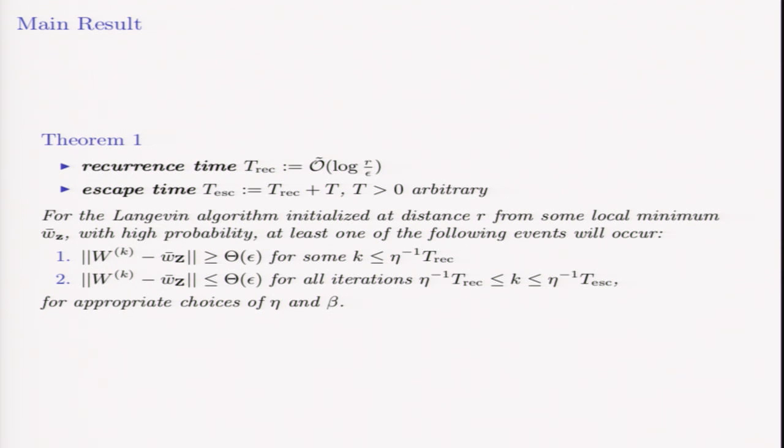With an appropriate choice of step size and the inverse temperature, with high probability, one of the following two things will happen: we will either be epsilon far from the local min by the recurrence time, or be epsilon close to it from the recurrence time through the escape time.